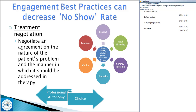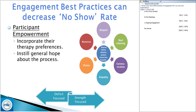We move from the professional having all autonomy over treatment services to individual participants having choices about what they're able to do. Around empowerment, our goal is to incorporate individuals' preferences into therapy and instill general hope about the process — move from being deficit-focused to more strength-based, and use those strengths to capitalize on making gains toward goals. That's important for building trust and relationship, so that participants truly benefit from treatment, are active participants, arrive when expected, and when they can't arrive you have some understanding of what's going on.